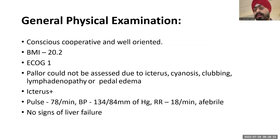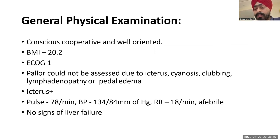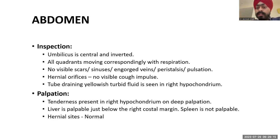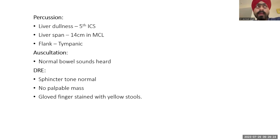On general physical examination: the patient is conscious, cooperative, oriented. BMI is 20.2. Icterus is present. Pallor could not be assessed due to the presence of icterus. No clubbing, lymphadenopathy, or sinuses. Pulse is 78 per minute, BP is 134/84, respiratory rate 18, patient is afebrile. No signs of liver failure.